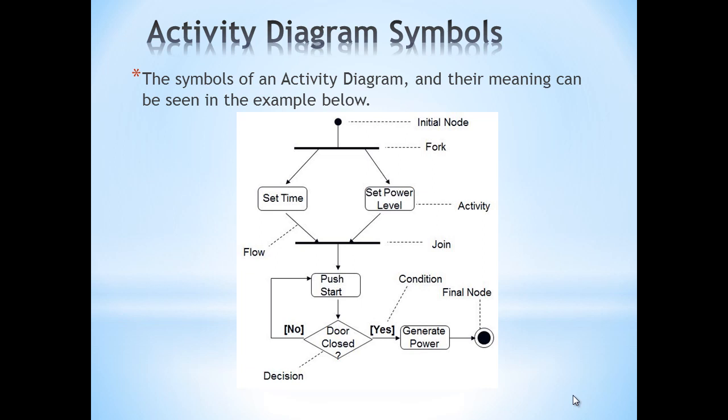To merge two flows running in parallel we use the join symbol, which is also a black bar. There is also the activity symbol, which is a rounded-tip square representing an action that one of the parties involved in the system does. At the bottom of the picture you'll see a diamond shape called the decision.